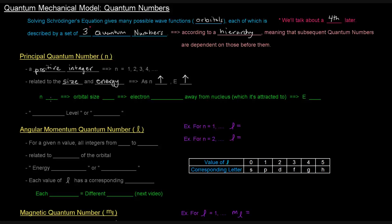Why does energy increase? As n increases, the orbital size increases, which means the electron is more likely to be further away from the nucleus. An electron is attracted to the nucleus — the nucleus is positively charged and the electrons are negatively charged, so they're attracted to each other. The electrons being further away is not favorable, so because they're not where they want to be, the energy level is higher.